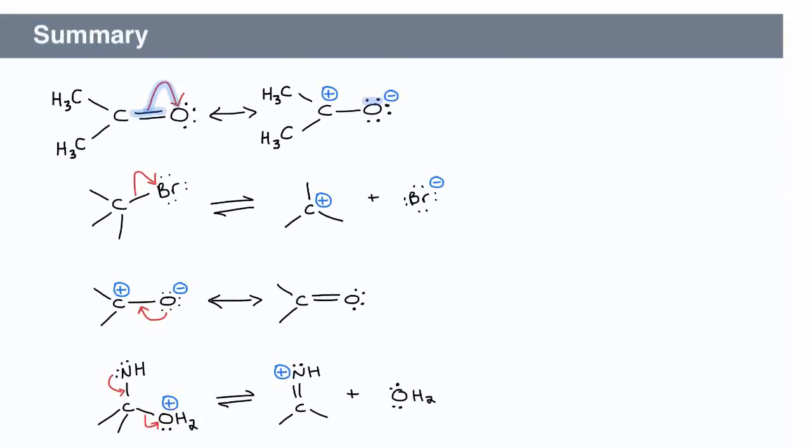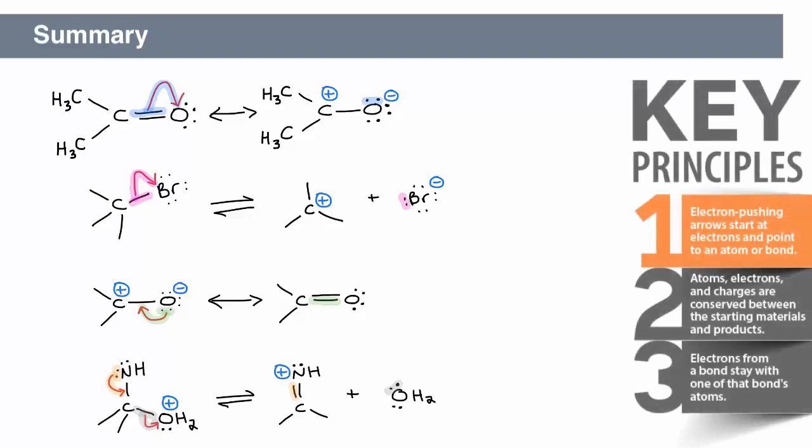In this video, we saw that electron-pushing arrows are used to depict the movement of electrons in a reaction mechanism. Key principles are respected in every mechanistic step. The arrows start from electrons and point to an atom or bond. Atoms, electrons, and charges are conserved between starting materials and products. Electrons from a bond stay with one of that bond's atoms.